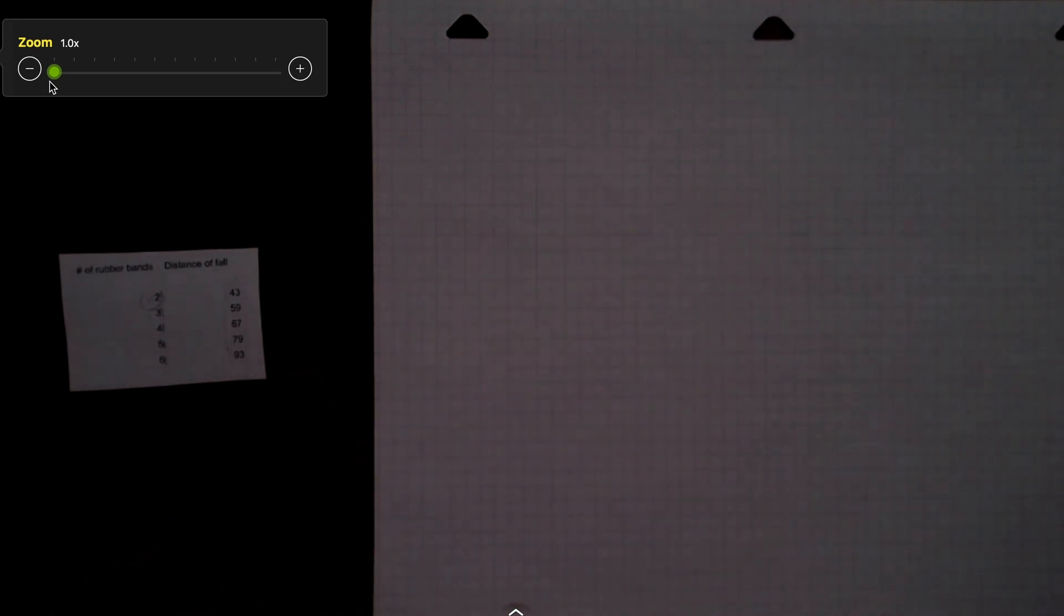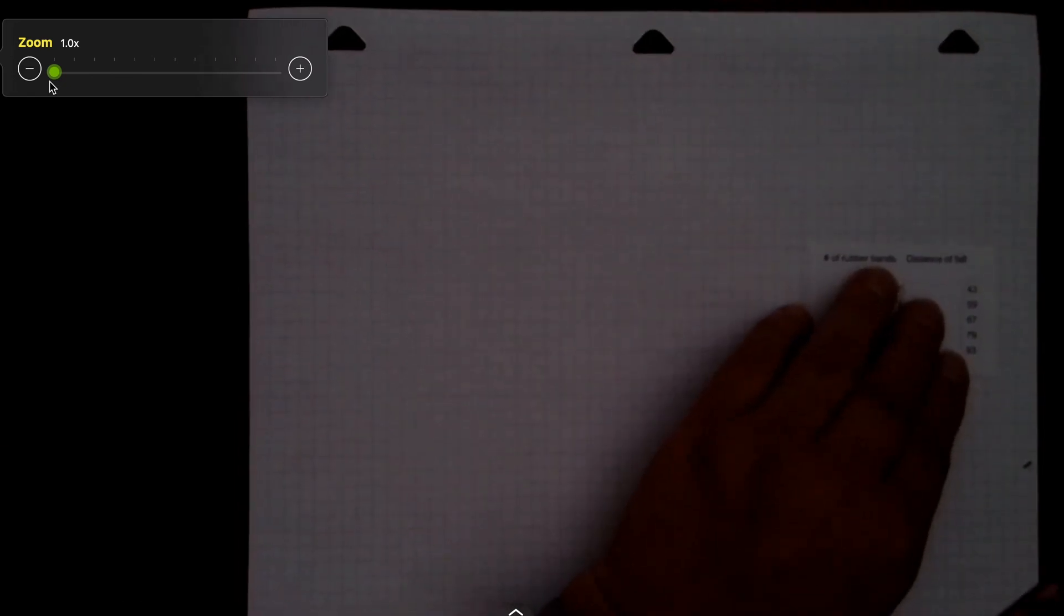I also instruct my students when they are graphing that it is the goal to use as much of the graph paper as possible. You want to make your graph fill as much of this area as you possibly can. The first thing you have to do is determine your range. My range for my x-axis, the independent variable, the number of rubber bands is simply 6. Please teach your students to always start at the origin.